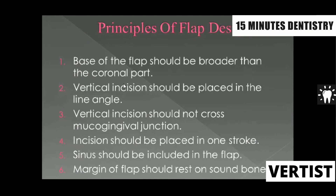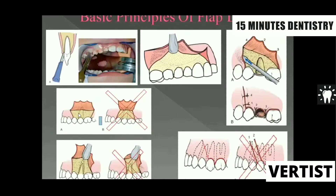The first principle: the base of the flap should be broader than the coronal part. As you can see in these pictures, the base of the flap is broader than the coronal part of the flap. If you do not follow this, the corner of the flap is going to become necrosed. That is the reason the base of the flap must always be broader than the coronal part.